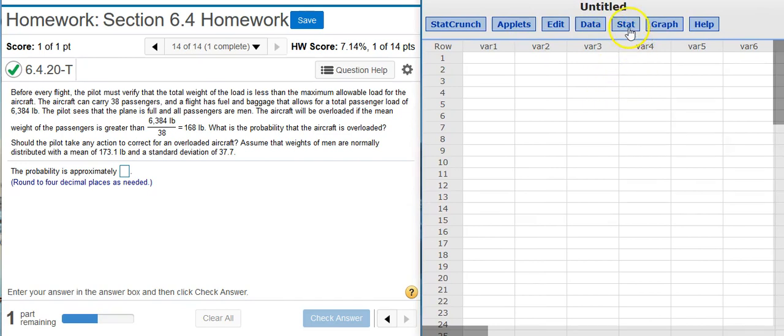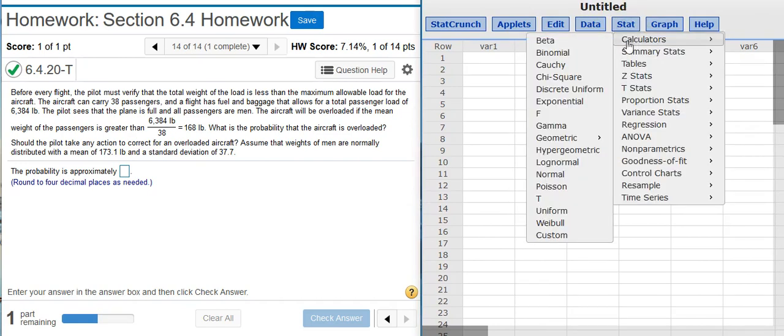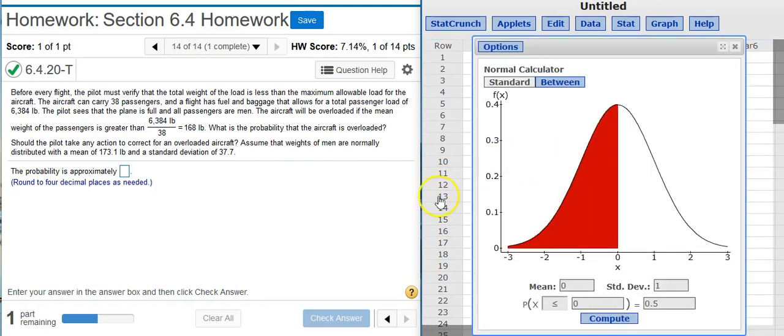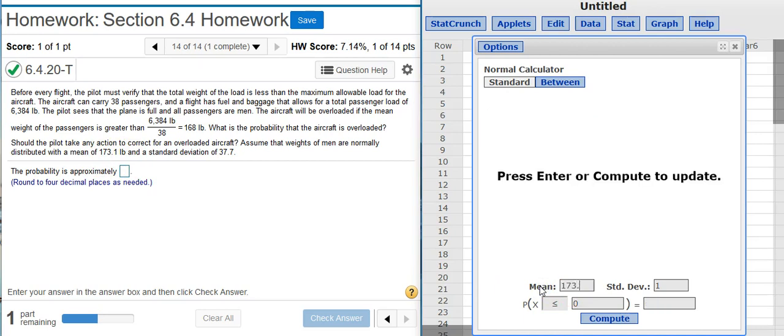here in StatCrunch, I go to Stat, Calculators, Normal. Here, I'm told that the mean of my distribution is 173.1. So, I'm going to put that in here, 173.1.